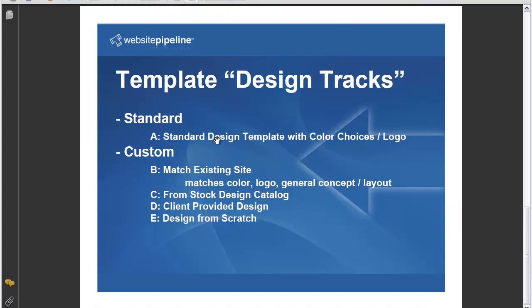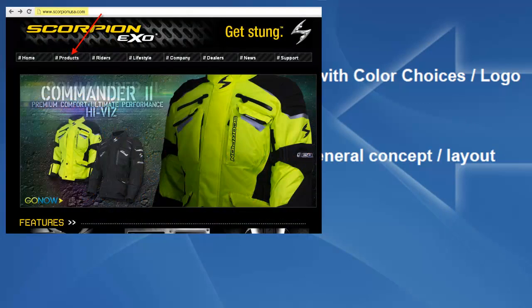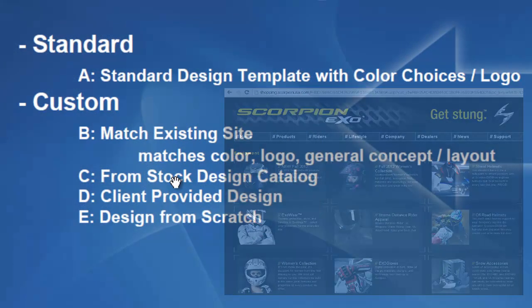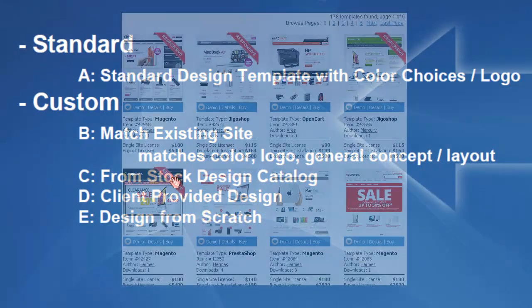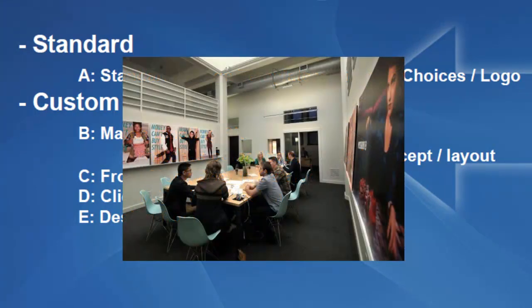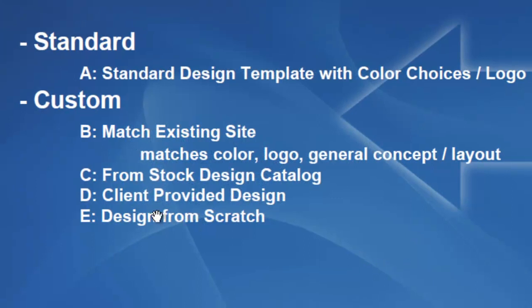The most common types of requests we get for design templates are what we call our design tracks, which are bundles of graphic design and web design time. The standard design is what the site comes with — no designer services needed. Match existing site occurs if you're linking your e-commerce site off your main site and we match the look and feel. Stock design catalog pulls from an online template catalog with thousands of templates you can pick from — our designers will customize and apply it. Client provided is if you have in-house designers or an ad agency supplying the template, which we integrate. Design from scratch is where our designers create the concepts and apply them to the site.